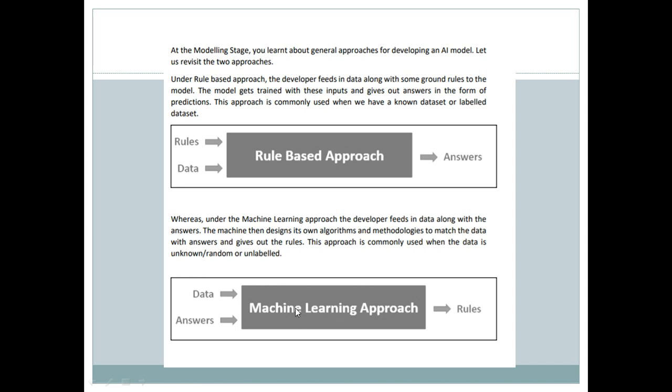In the learning approach, there are data and answers, and the machine gives out rules. The machine develops its own algorithms and understands the data. This is also a clustering technique where the clusters are known, the data is available, but the rules are yet to be figured out. The machine designs its own algorithms and methodologies to match the data with the answers.